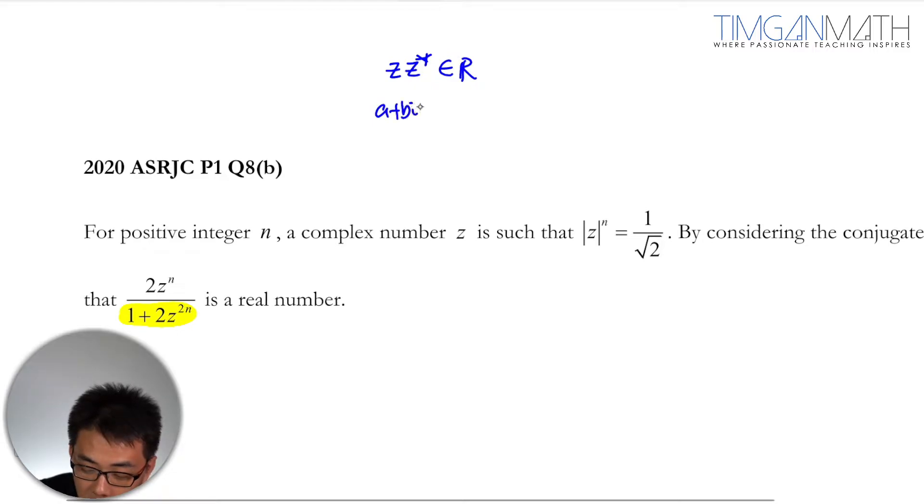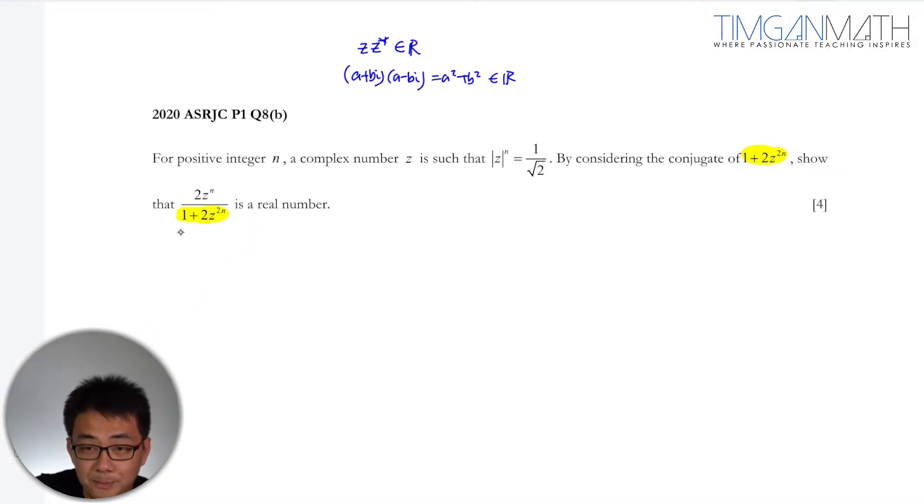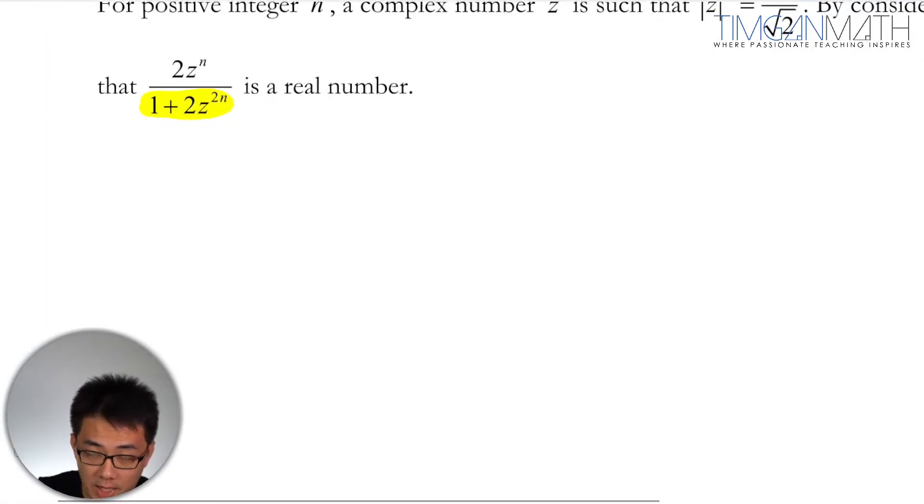You can just quickly do (a + bi) multiplied by (a - bi). This will just be a² + b², which is actually a real value. So it's very clear that if we want to show that this is a real number, we just need to multiply by the conjugate pairs.